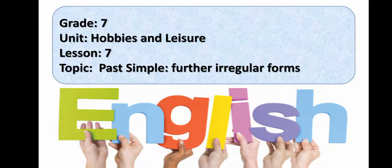Hello. The unit is Hobbies and Leisure, Lesson 7. The topic of today's lesson is Past Simple: further irregular forms.